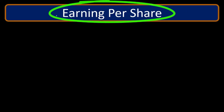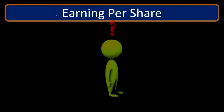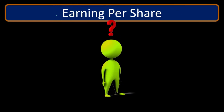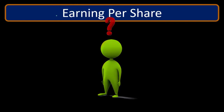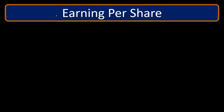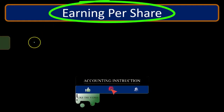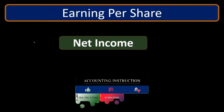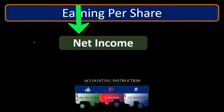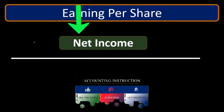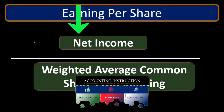It will almost never be what is distributed and can lead to untrue expectations about what the dividends may be. To think about this further, let's take a look at the calculation. We'll start with net income and then divide net income by the weighted average common shares outstanding.